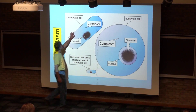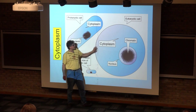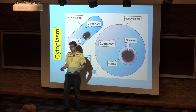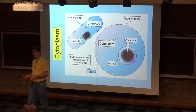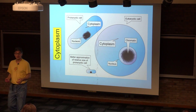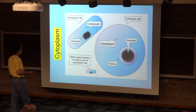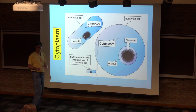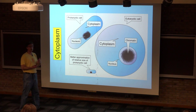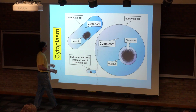This here is a representation of that plasma membrane, and what this is doing is actually two things: it's showing you the difference between eukaryotic cells and prokaryotic cells, and it's also showing you where the cytoplasm is located.